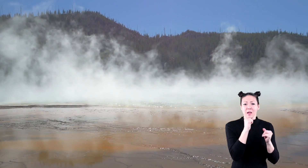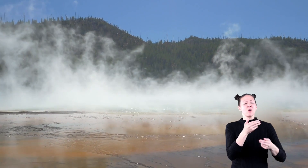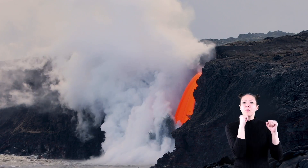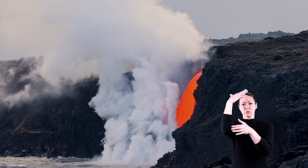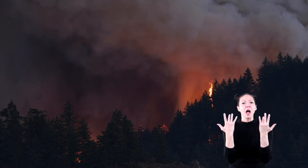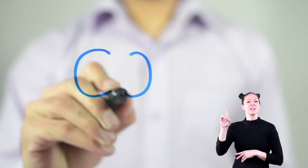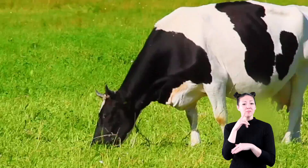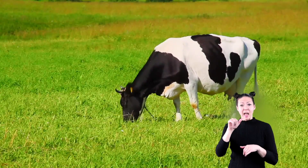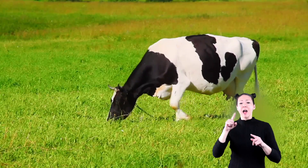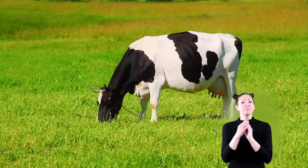Pollution can be caused naturally. Natural pollution may come from volcanoes, forest fires, windstorms, pollen in the air, and other sources in nature. Even the air we breathe out, carbon dioxide, is a form of pollution.